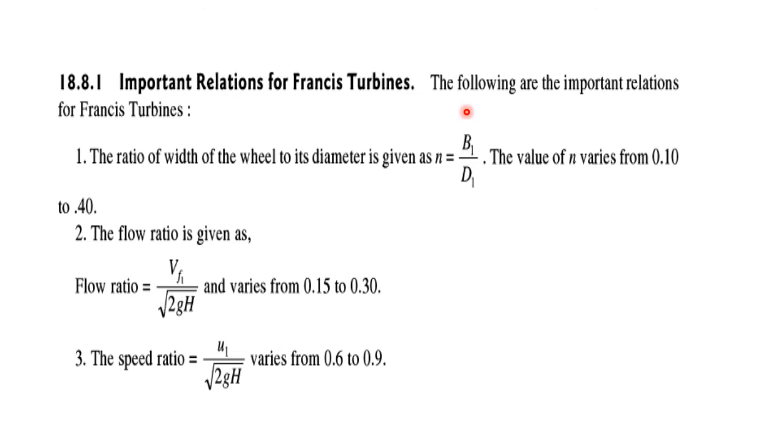Important relations for Francis turbine: The ratio of width of the wheel to its diameter is N = B1/D1, the value varies from 0.10 to 0.40. The flow ratio is Vf1/√(2gh) and varies from 0.15 to 0.30. The speed ratio is U1/√(2gh), which varies from 0.6 to 0.9.